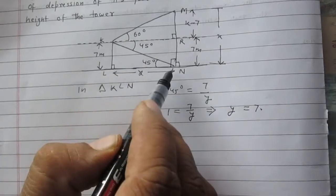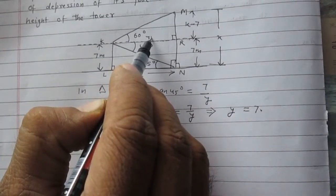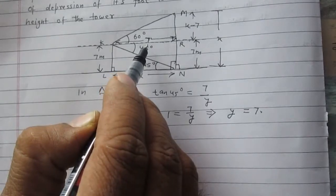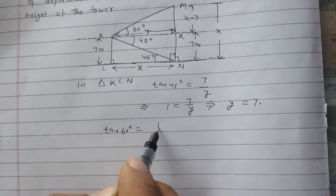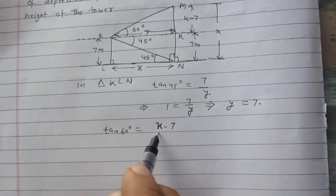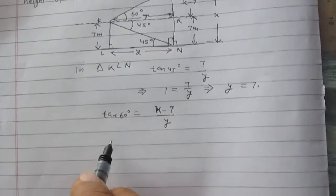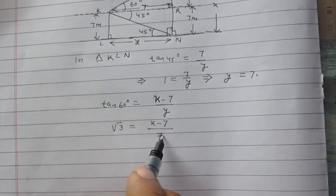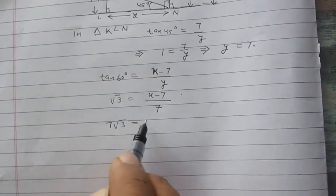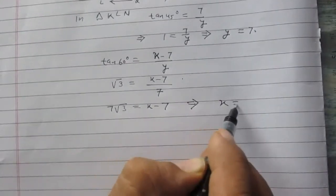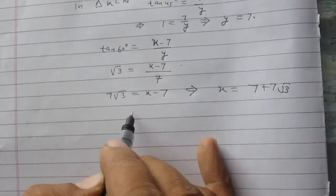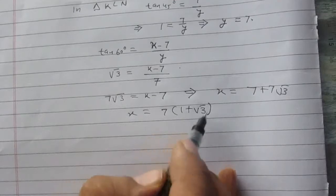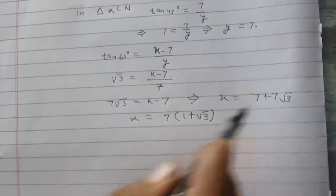In right angle triangle MRK, the side KR equals Y, so KR is 7 meters, since opposite sides of a parallelogram are equal. So tan(60°) = (X − 7) / Y. Since tan(60°) = √3 and Y = 7, we get √3 = (X − 7) / 7, which gives 7√3 = X − 7. Therefore X = 7 + 7√3, or equivalently 7(1 + √3). The height of the tower is 7(1 + √3) meters.